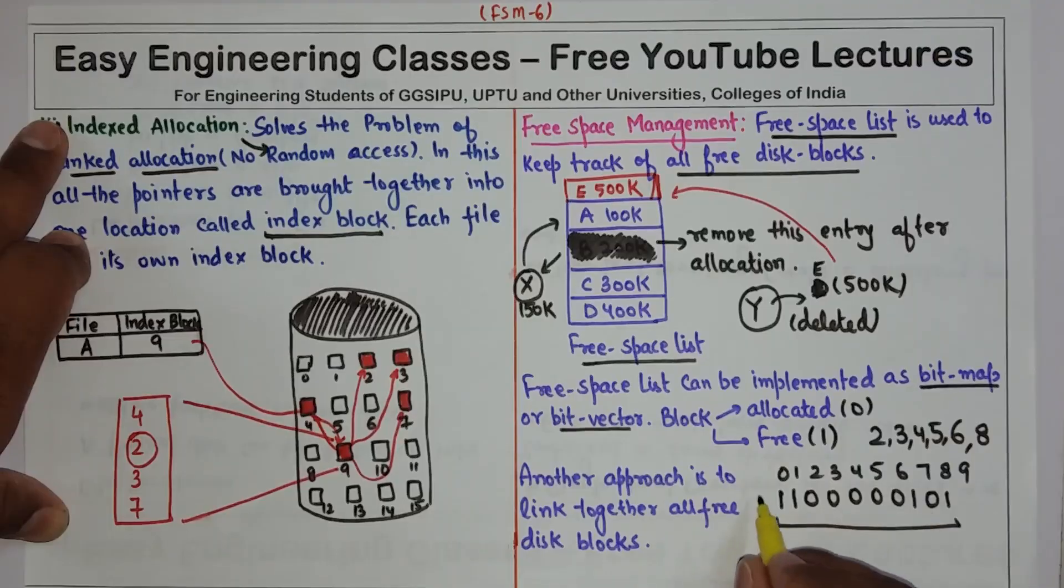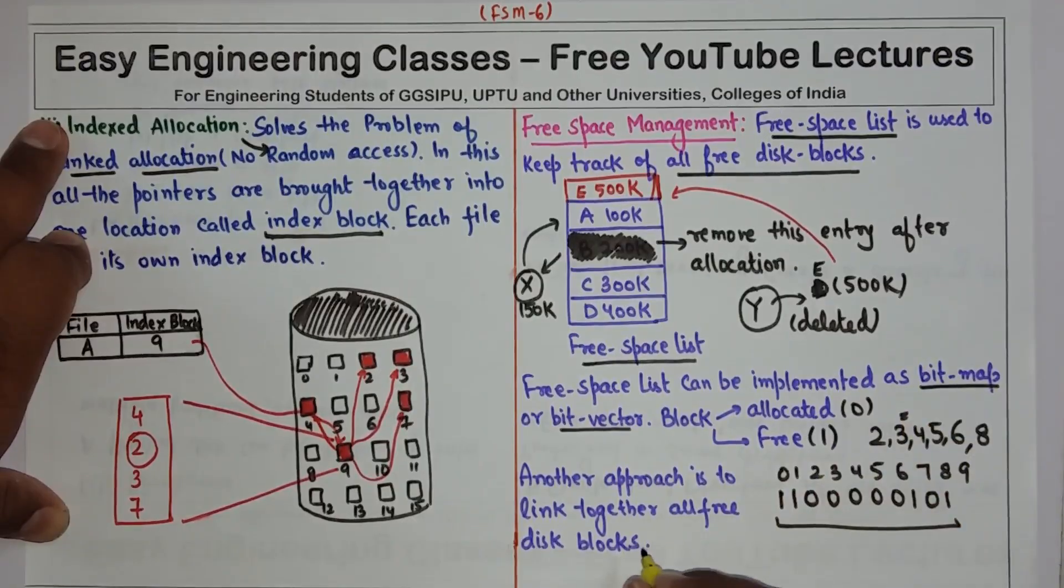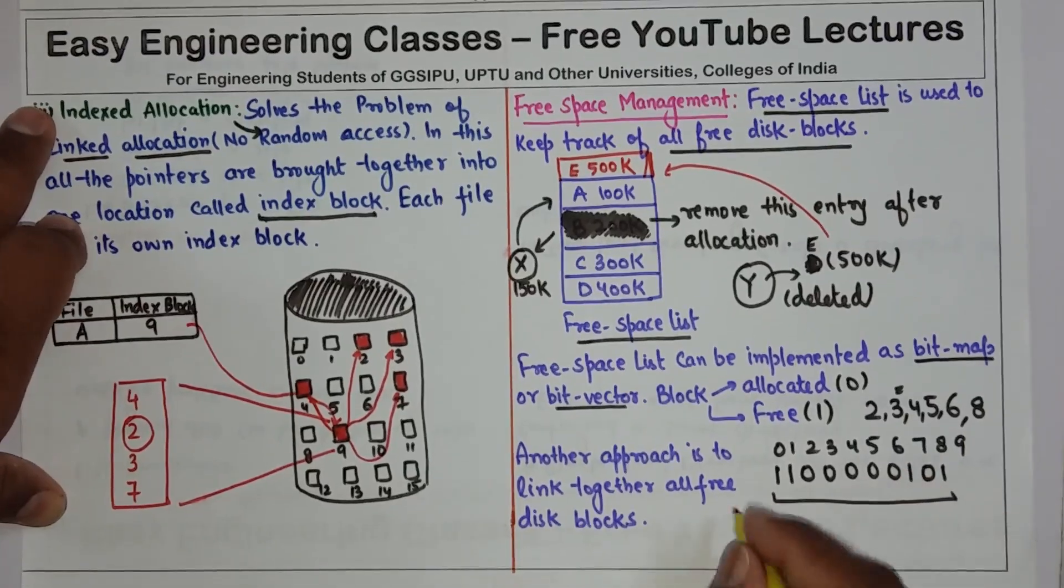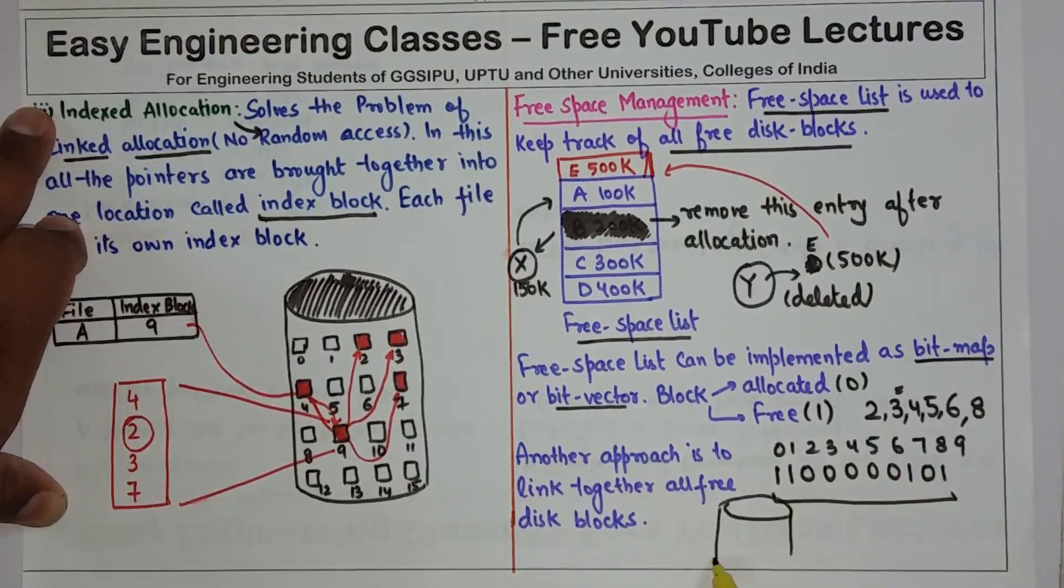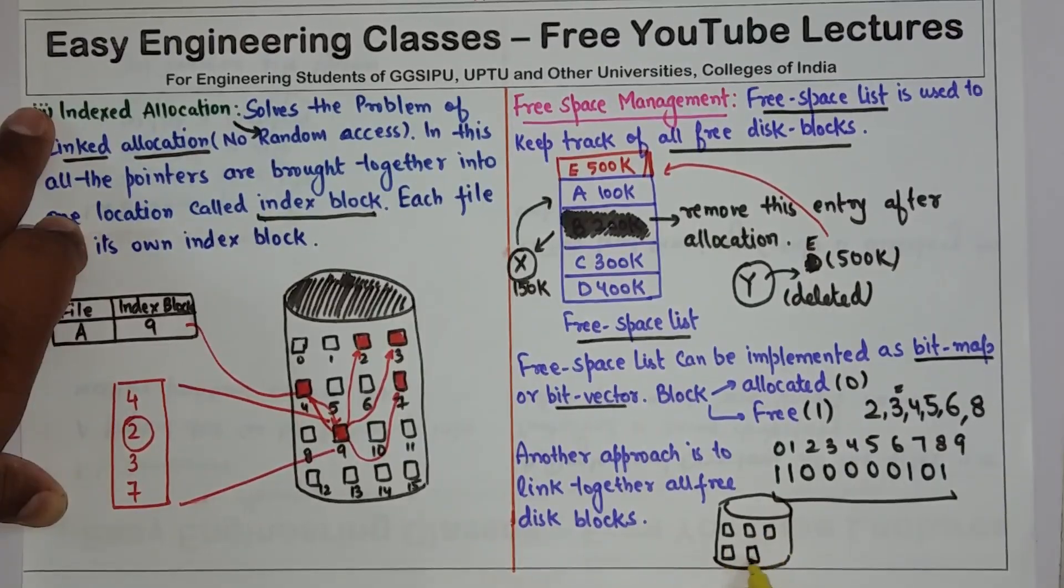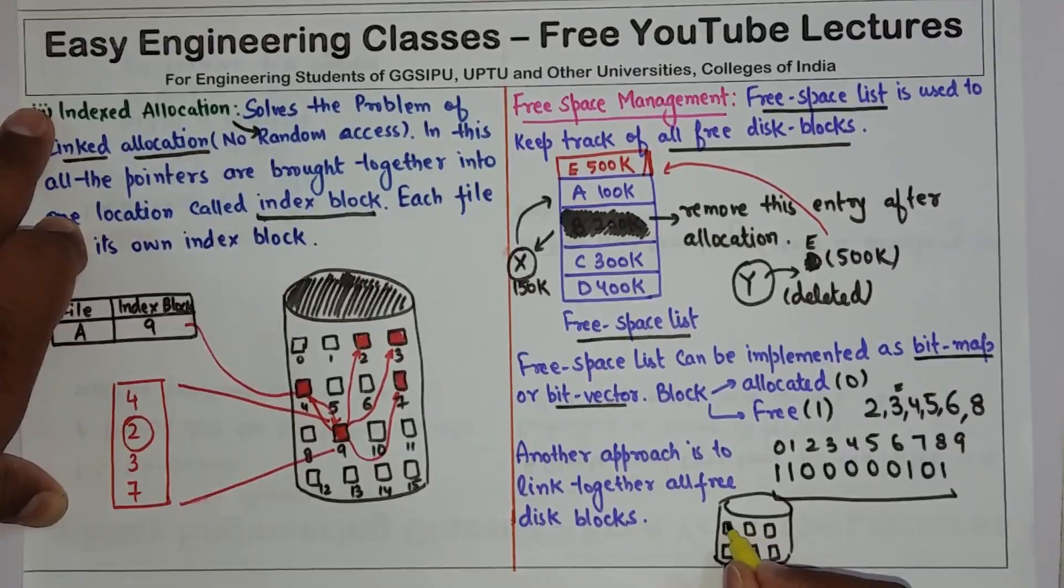Second approach is to link together all free disk blocks. So for example, if I have a disk like this, and these are the blocks, these are the blocks, these are the blocks, and these blocks are free, these three blocks are free.